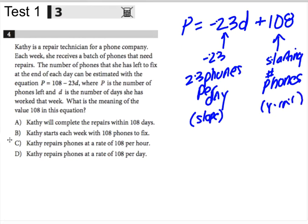So Kathy starts each week with 108 phones to fix. That's the winner, right? So she doesn't complete the repairs within 108 days. That wouldn't make sense, right? D is day, not the 108. She does not fix 108 phones per hour. That's 23 phones per hour. Sorry, per, not hour, day.